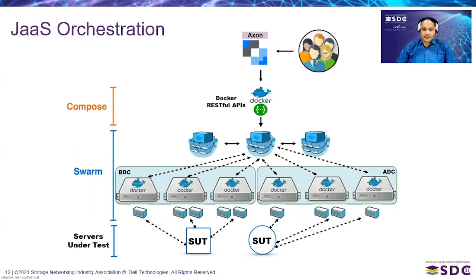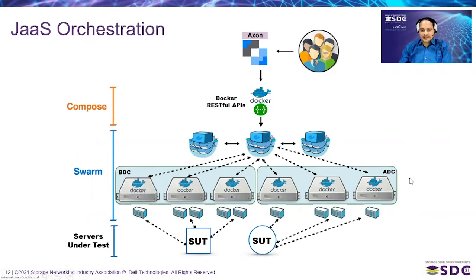The solution can also be orchestrated across different geo-located labs. If a user selects a workload to run in the Bangalore Development Center, the Docker service places containers in the Bangalore load generators, which then stress the system under test there. Similarly for Austin Development Center. Labs can be scaled horizontally by adding load generators into the cluster and geo-tagging nodes to particular labs, so users can choose which lab to run containers in.